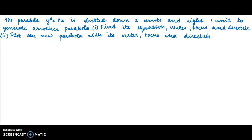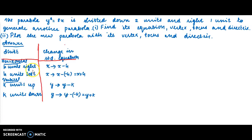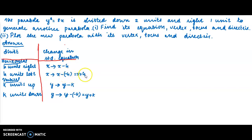Now we apply this to y² = 8x. I have represented the changes in a table. Horizontal shift means change in x; vertical shift means change in y. Horizontal right is a positive change — replace x by x minus h. Horizontal left is a negative change — replace x by x plus h.